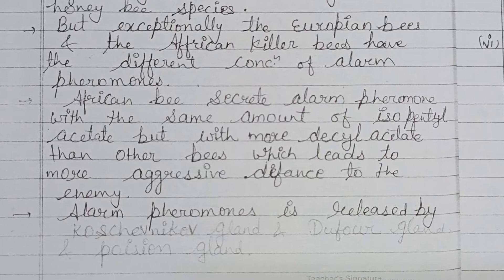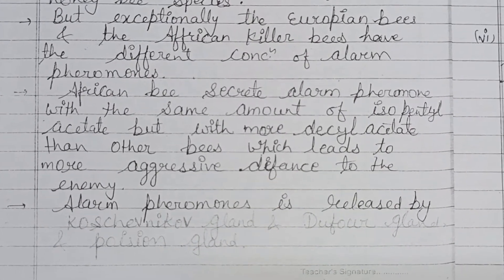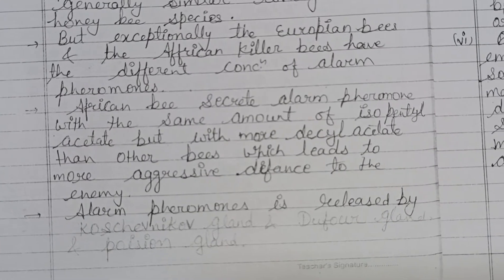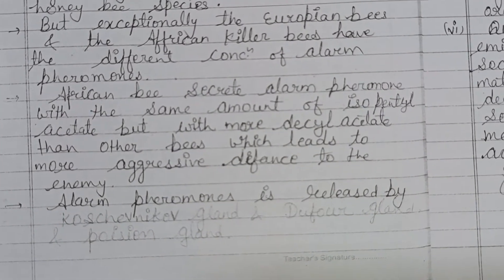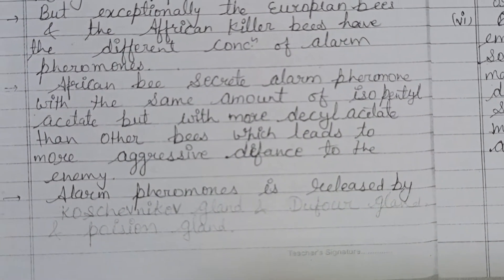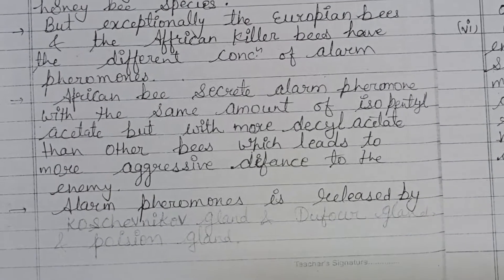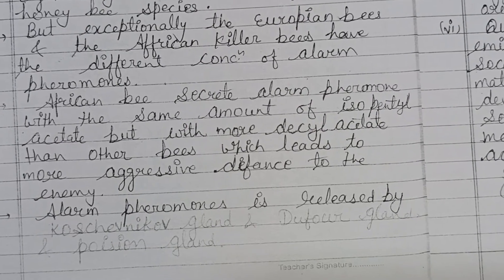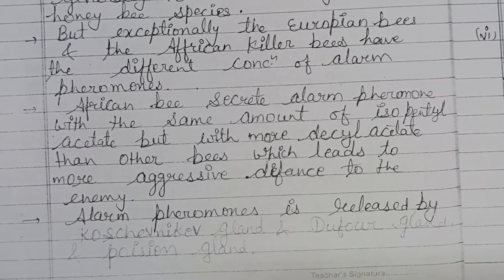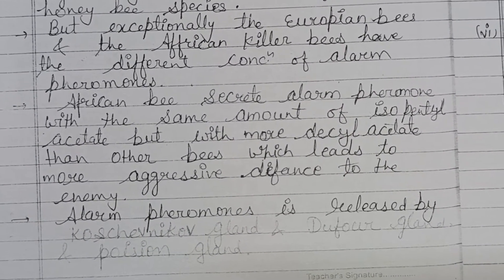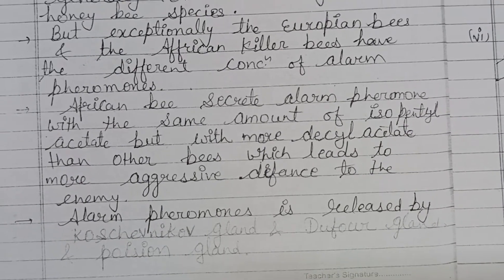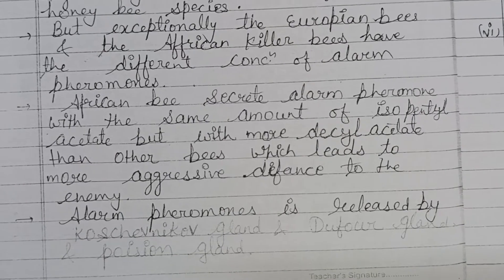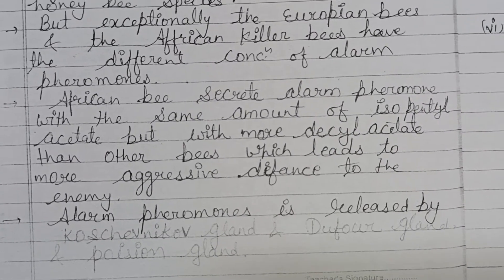Alarm pheromone is released by the Koschevnikov gland, the Dufour gland, and the poison gland. The alarm pheromone of Apis mellifera contains compounds that orient other bees to the tagged target. Isopentyl acetate only increases flight activity, while a mixture of chemicals — like isopentyl acetate, butyl acetate, 1-hexanol, and 1-butanol — serve to recruit bees from the interior of the colony.